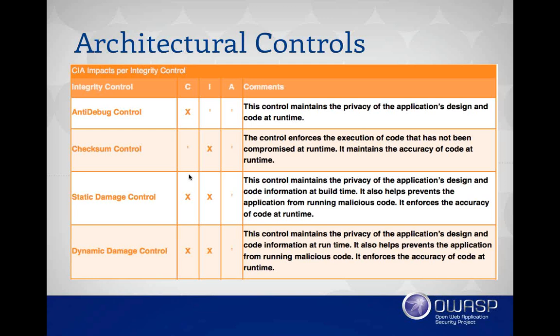Static damage is an interesting one. Static damage controls — what we can do is when we are building and compiling our application, we can actually pre-damage certain regions of the code or data sitting on disk. When you're looking at the final binary, parts of the sensitive code will be replaced with garbage. The actual correct part will be encrypted and sitting somewhere else within that binary, heavily obfuscated so it will be very difficult for an attacker to figure out at runtime where this code is located. While it's sitting on disk it's encrypted, so if you do static analysis you can't actually identify what the code is doing.